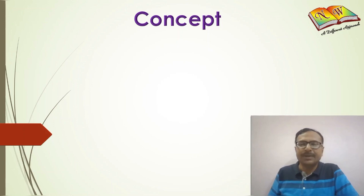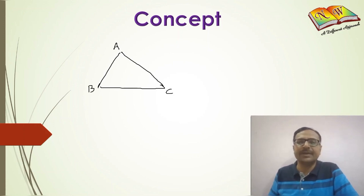The concept here is you have to first draw a triangle, say the triangle is ABC. It can be any triangle whether it is scalene, isosceles, right angle triangle, or equilateral triangle, and measure the three sides of the triangle.